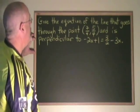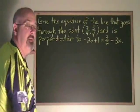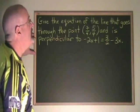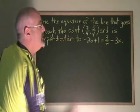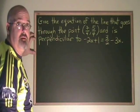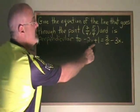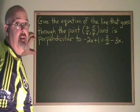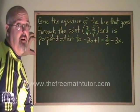In this example, we are asked to give the equation of the line that goes through the point (7/4, 5/4) and is perpendicular to -2x + 1 = 3/2 - 3x. The first thing we should notice is that this equation does not have a y, and therefore it will simplify to x equals number. It is a vertical line.